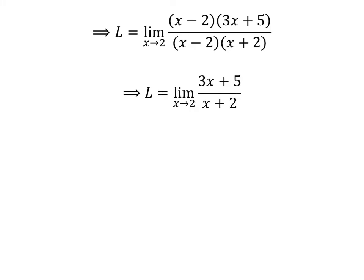Now let us cancel out the common factor (x minus 2) in the numerator and the denominator. So L is equal to the limit of (3x plus 5) upon (x plus 2) as x approaches 2.